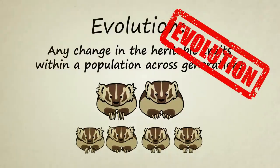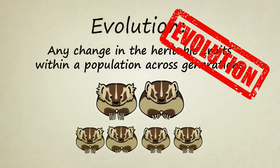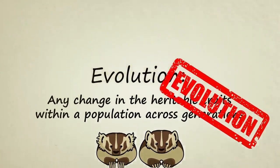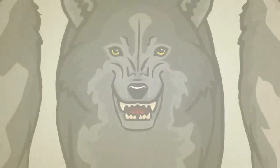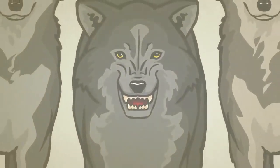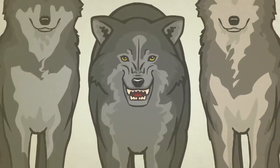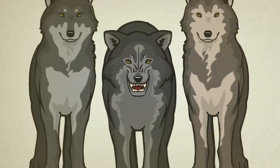So there you have it — evolution is really pretty simple. Scientists and normal folks everywhere witness evolution happening all the time. Small changes like the ones we've seen here can add up over multiple generations to create dramatic changes. If you were to go back in time just a few thousand years, you'd find that all dogs, for example, originally evolved from an ancestral group of gray wolves.